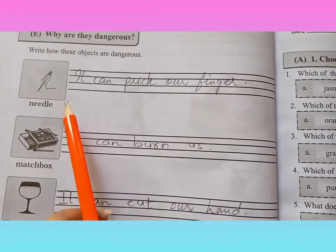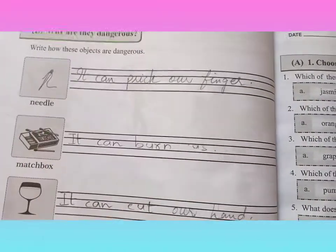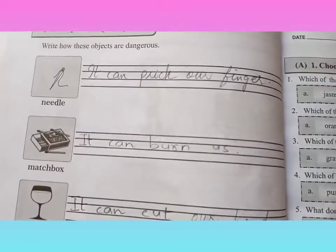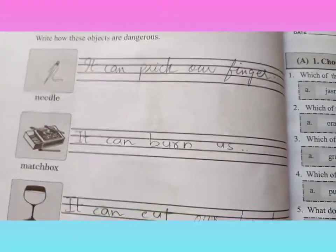First of all, needle. It can prick our finger. If it pricks a finger, it starts to remove blood. Blood starts to come out. This is dangerous.